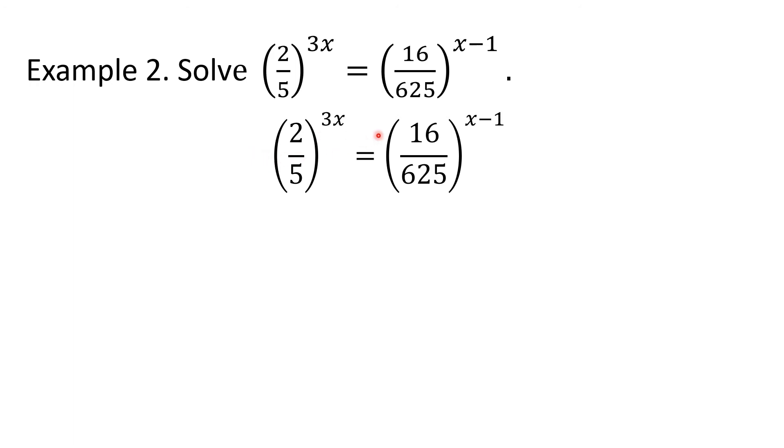For us to solve for the value of x, which is in the exponent, again, the goal to meet is make the bases the same. So how will we express 16 over 625 in terms of 2 fifths? Notice that 16 is 2 to the 4th, and 625 is 5 to the 4th. So this right-hand side may be rewritten as 2 fifths to the 4th. This means 2 to the 4th over 5 to the 4th, and then this whole is raised to x minus 1 from the given.